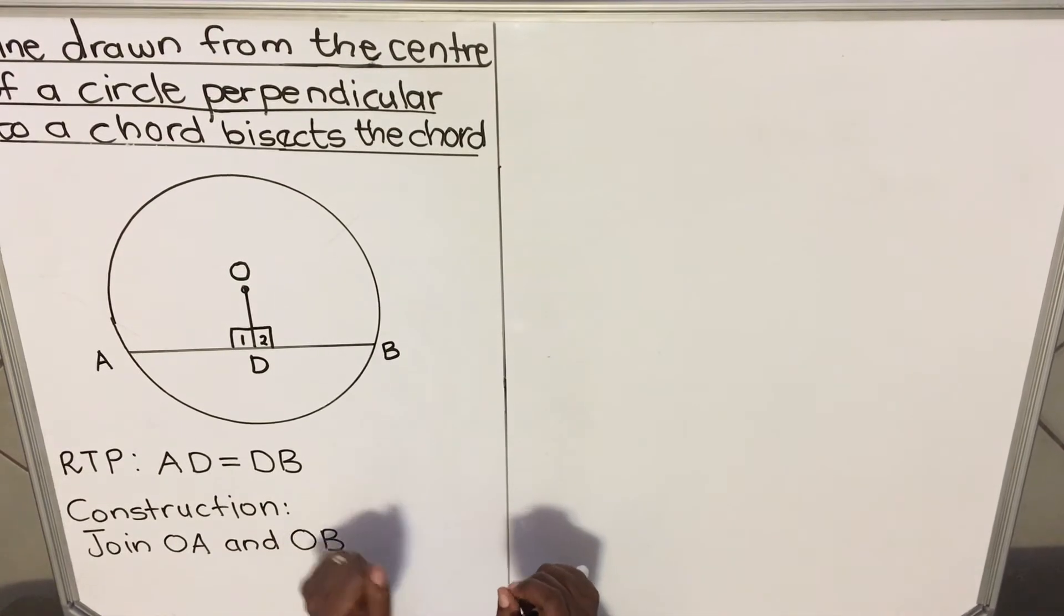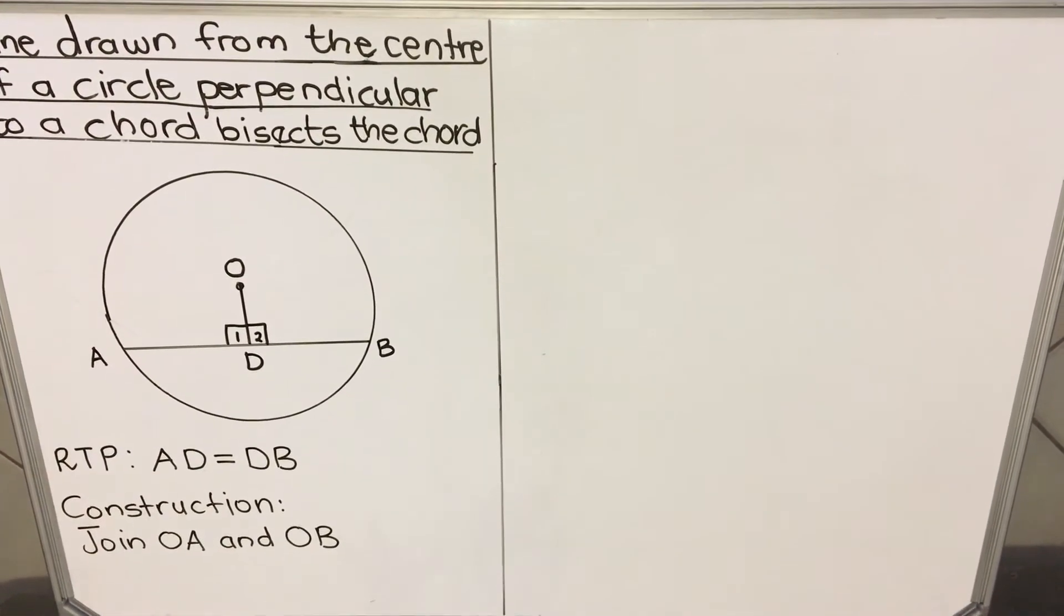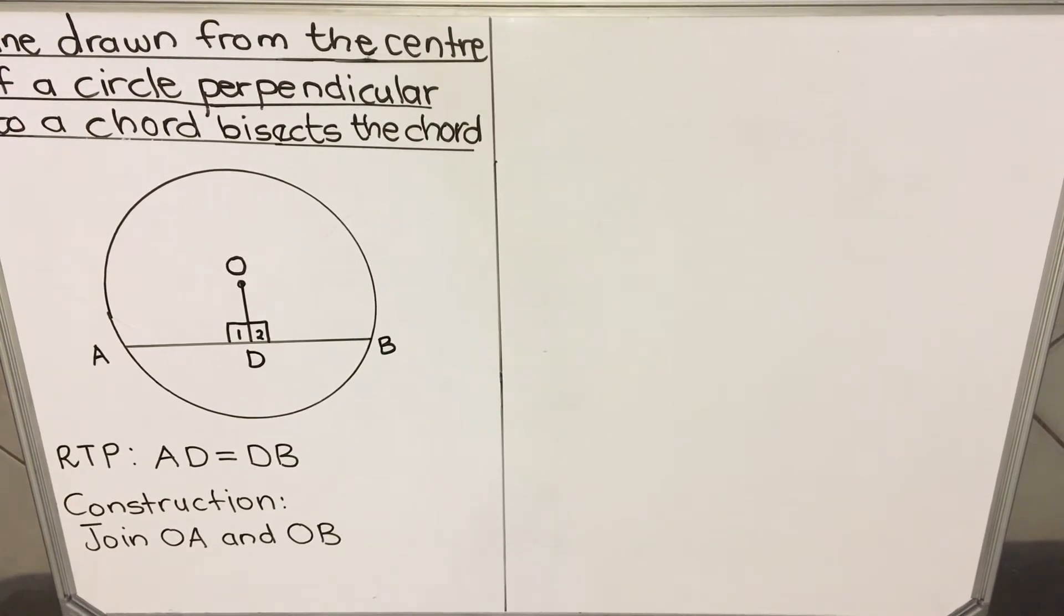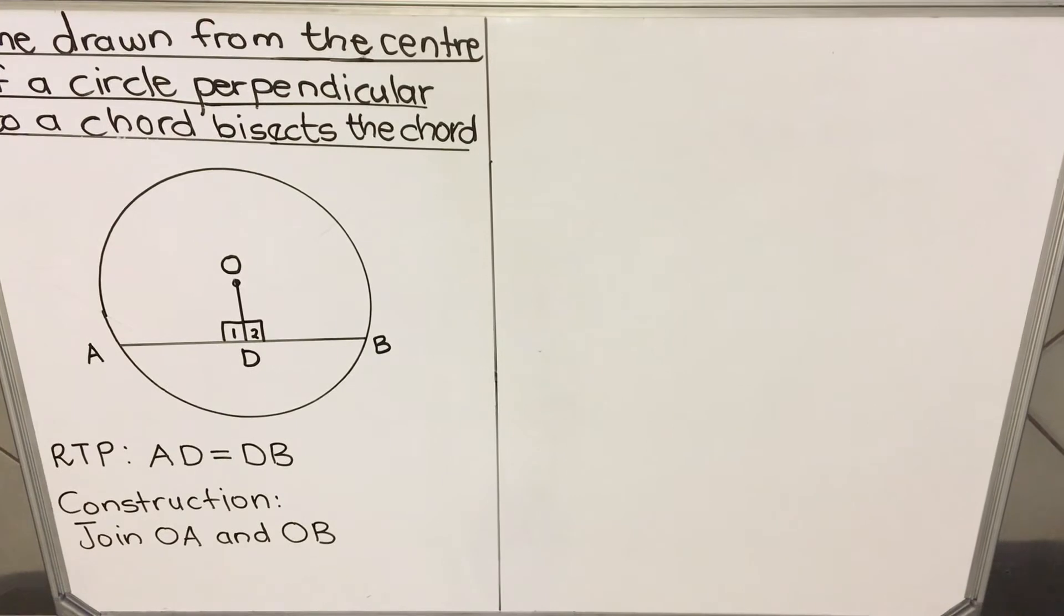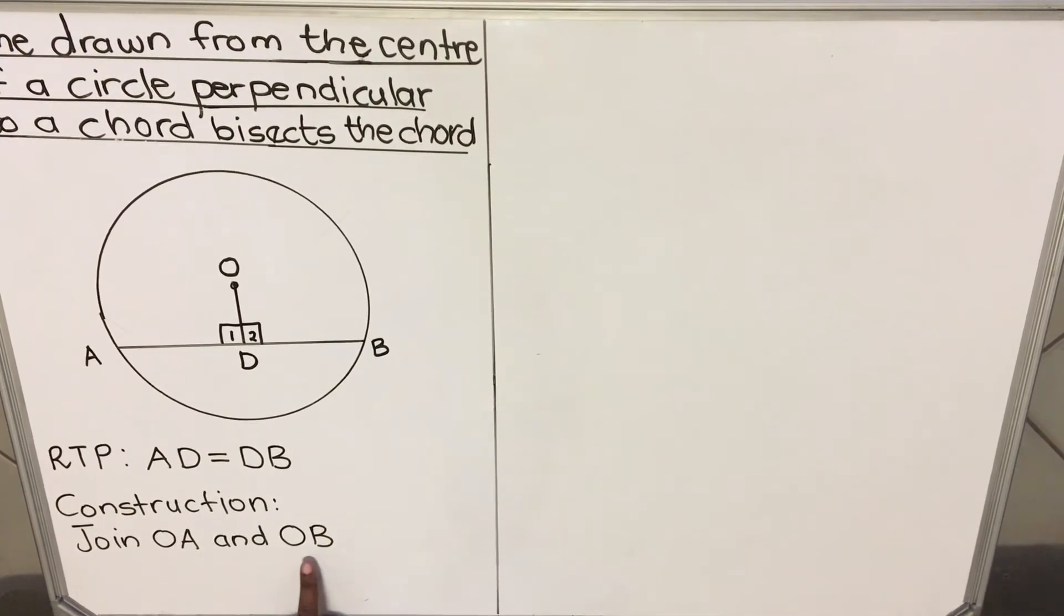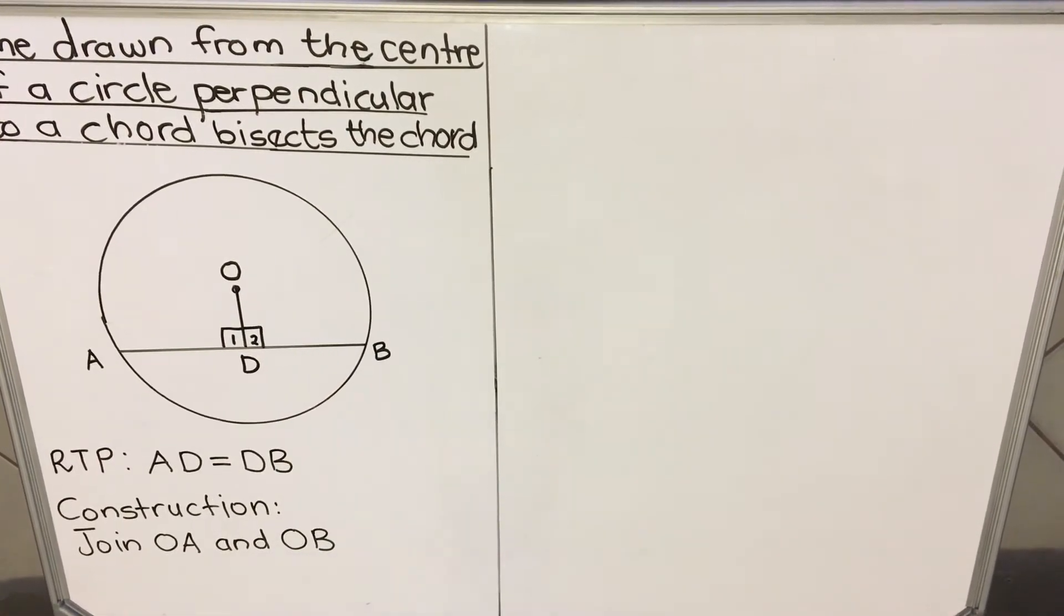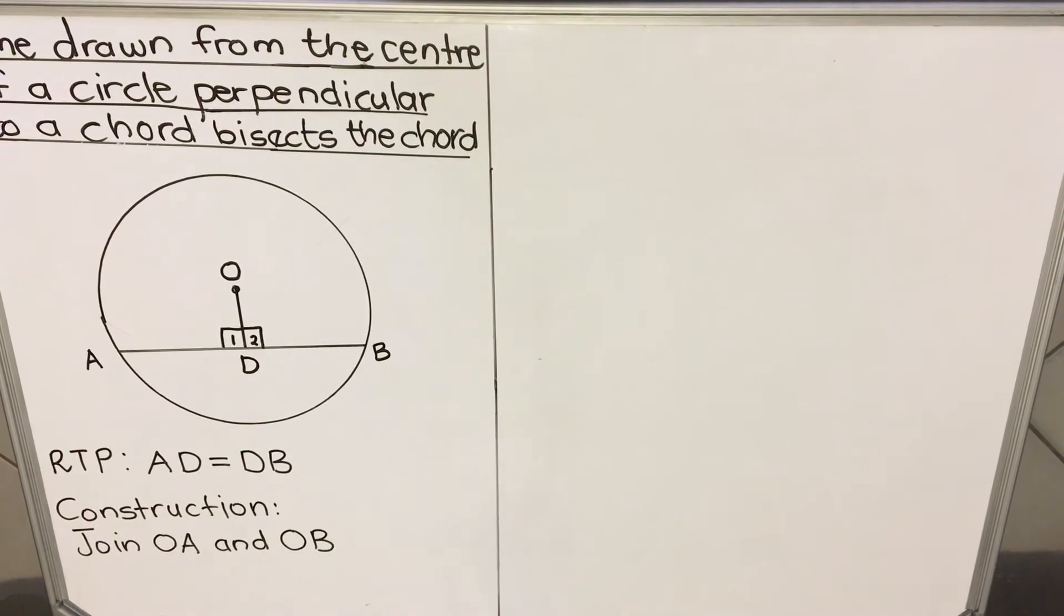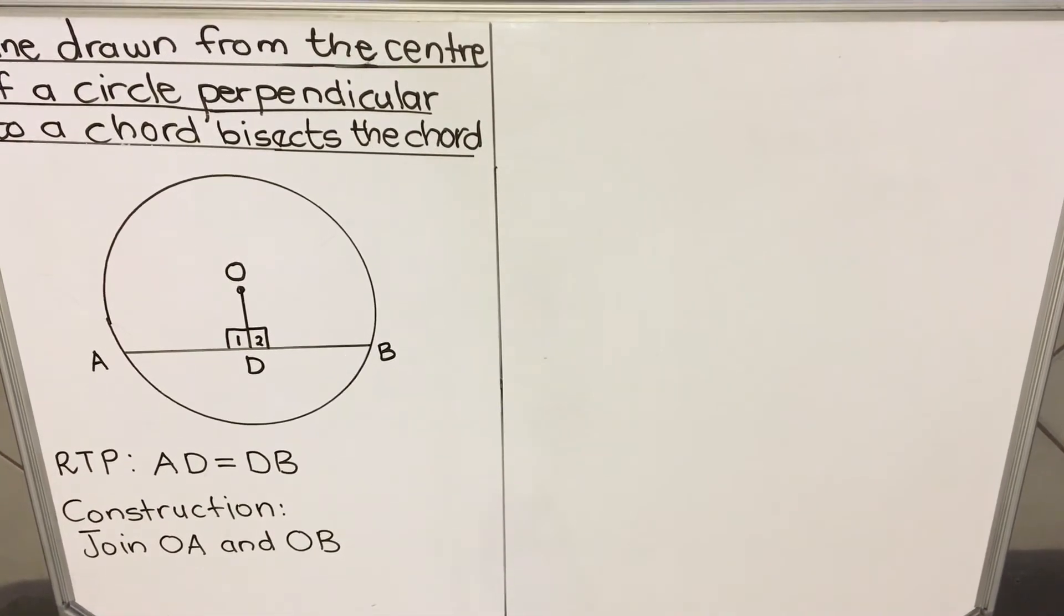Then you have to construct. Construction. You memorize the construction. This theorem goes with this construction. You can't come up with your own. You memorize it like it's written in the textbook. So the construction, it says we must join OA and OB. These lines, OA and OB, are radii. So we're going to join those radii. When you do a construction, you do dotted lines. Use your ruler and do dotted lines and draw them.